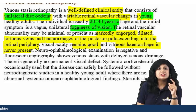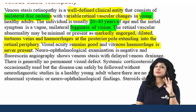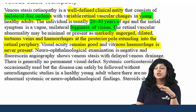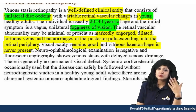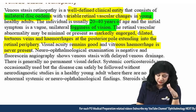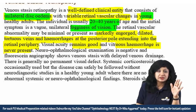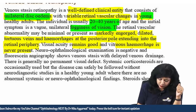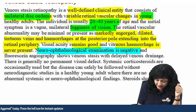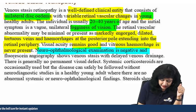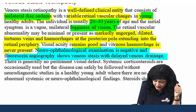This is very important when comparing CRAO and CRVO. In CRAO the patient is almost completely blind, but in venous stasis retinopathy visual acuity remains good and there is no vitreous hemorrhage. The neuro-ophthalmological examination is negative, and fluorescein angiography shows venous stasis with delayed venous drainage.